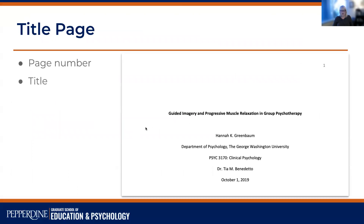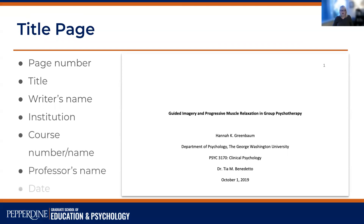I'll go through some of those requirements now. This is a screenshot of the top half of a title page. On this title page, you have the page number in the top right and no running head. Then you space down a little bit, put your title in title case and bold and centered, with a blank line below it. Then you have your name, your school, your course and course name, your professor's name, and the date. Notice that all of this is in double spacing — the whole APA document is double spaced. There are just a few extra blank lines on the title page, including one between the title and your name.